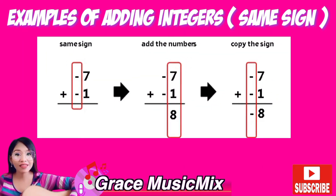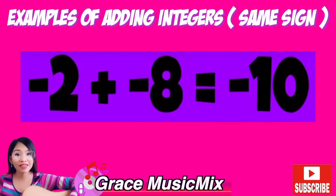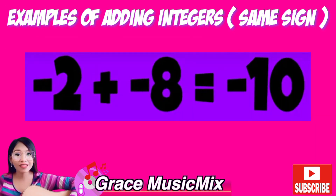Example number 2: negative 7 plus negative 1 is equal to negative 8. Example number 3: negative 2 plus negative 8 is equal to negative 10.